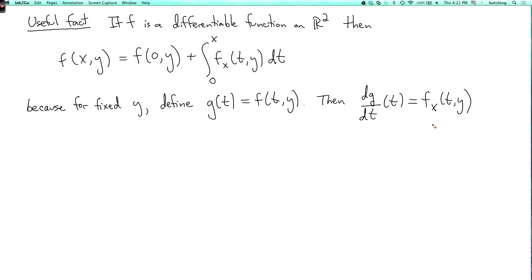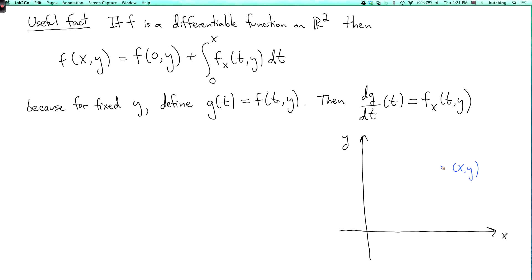So you can integrate f_x from t = 0 to t = x, and the fundamental theorem of calculus says you will get f(x, y) minus f(0, y). Geometrically, we have some point (x, y) and we're looking at a line connecting (x, y) to the point (0, y), and we're integrating the partial derivative with respect to x along this line to relate f(x, y) to f(0, y).